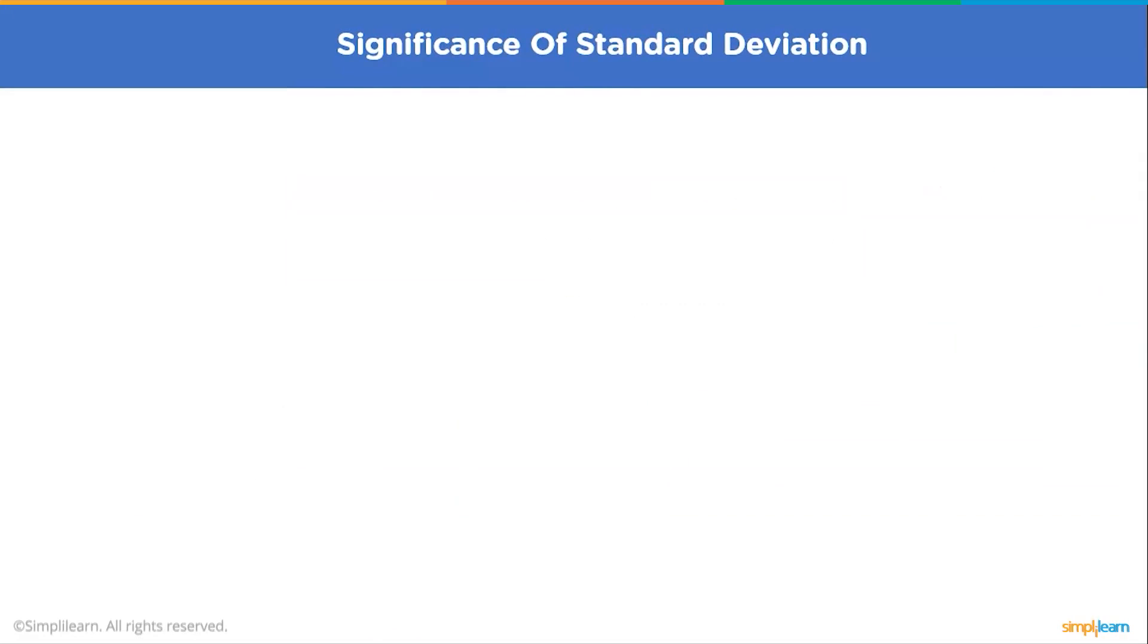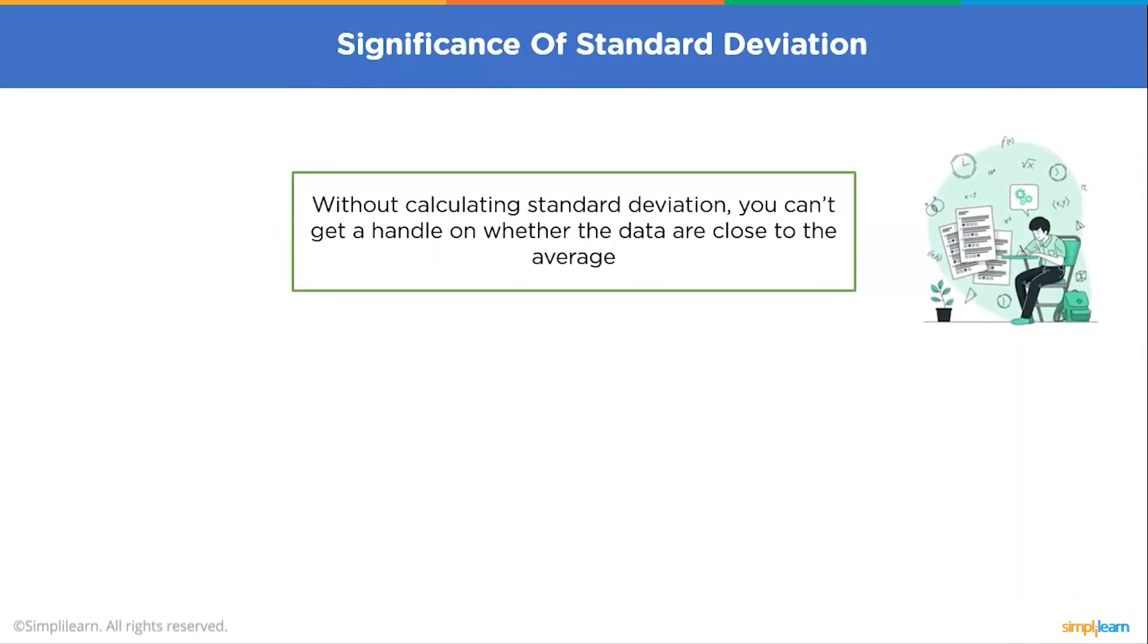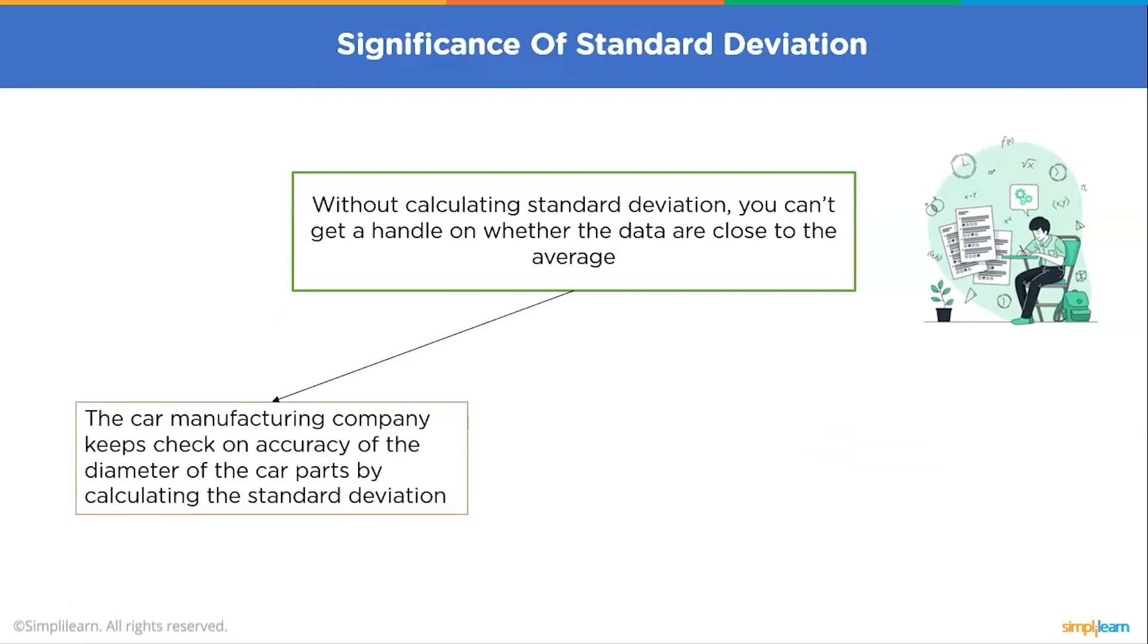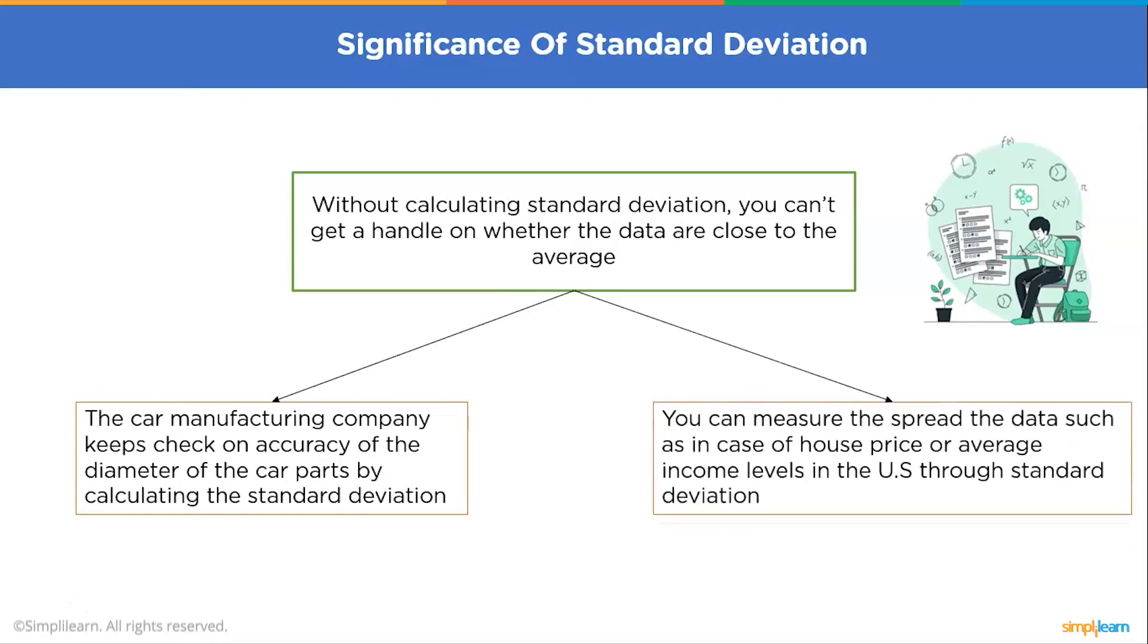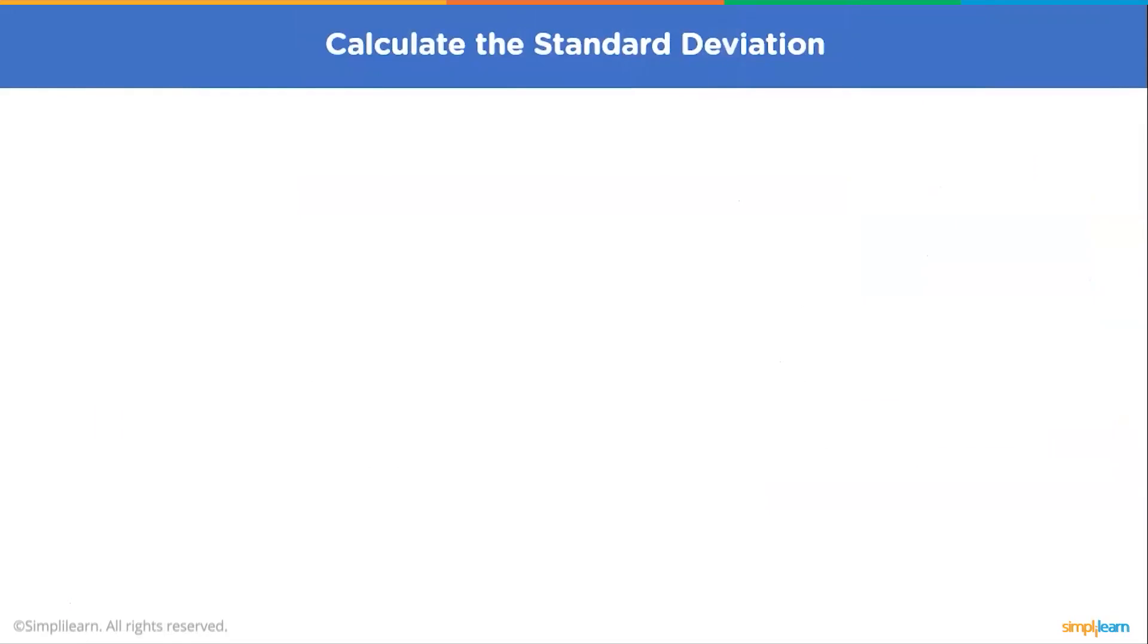Now let's understand the significance of standard deviation. To get insights on a large data set, you need this standard deviation. Suppose you are the owner of a car company where you manufacture car parts. And you want to keep check on the accuracy of the diameter of the car parts that are being manufactured in your company. Standard deviation can be very helpful in this. You can calculate the deviation from the mean of the car parts that are being manufactured. The second example you can think of is the spread of the data, such as in the case of house prices or the average income levels in the US, measured through the standard deviation.